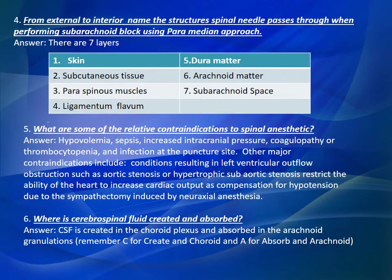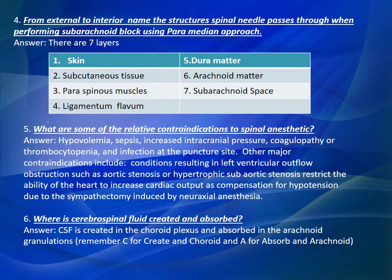Question Number 4: From exterior to interior, name the structures a spinal needle passes through when performing a subarachnoid block using the paramedian approach. There are 7 layers: 1. Skin, 2. Subcutaneous tissues, 3. Paraspinous muscles, 4. Ligamentum flavum, 5. Dura mater, 6. Arachnoid mater, 7. Subarachnoid space.